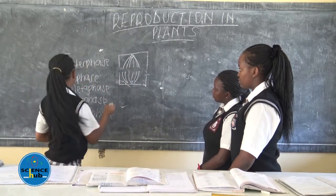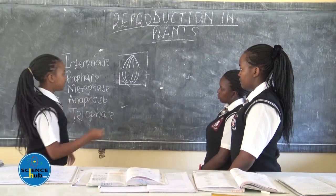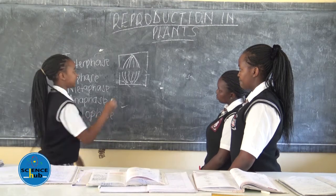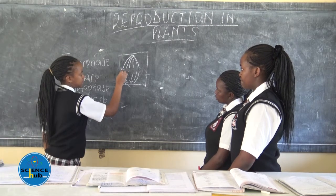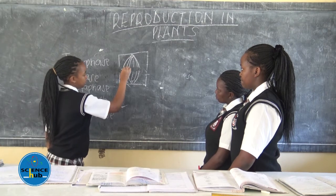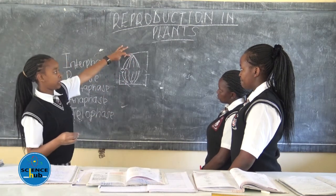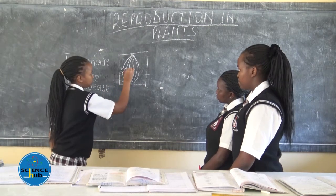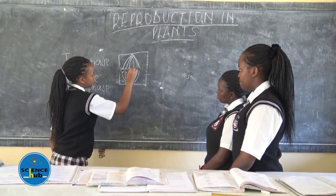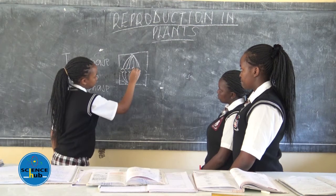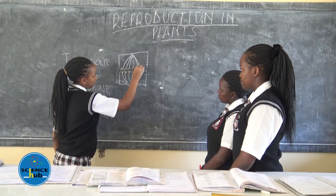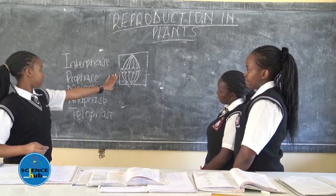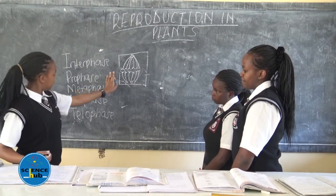Then we have the anaphase, whereby the chromatids start to move apart from each other. In the anaphase, the chromatids have separated themselves, forming separate chromatids. They start to move toward the north and south poles along the spindle fibers. This is the anaphase.